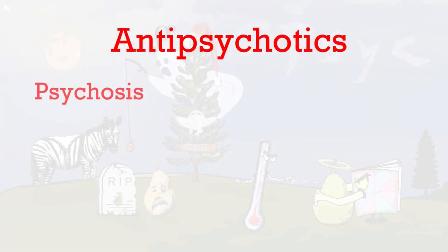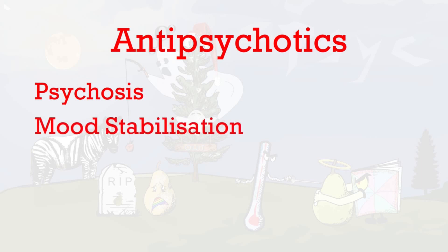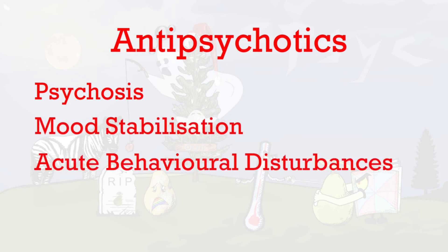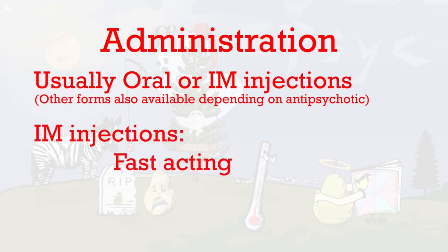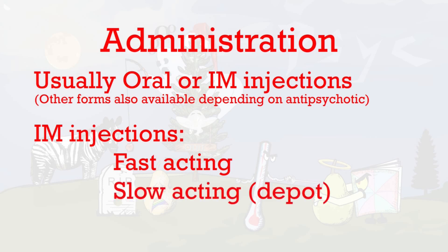Antipsychotics are a class of drugs used in the treatment of psychosis, mood stabilization, and acute behavioral disturbances. They're usually taken orally; however, some antipsychotics can be given as an intramuscular injection — either fast-acting injections used in acute behavioral disturbances, or slow-acting depot injections often used for chronic conditions like schizophrenia and when there are compliance issues with oral medications.